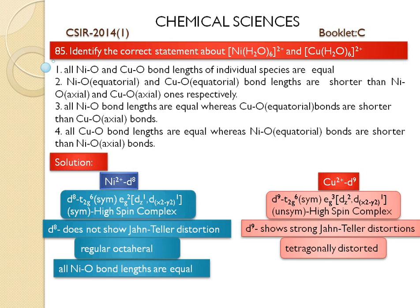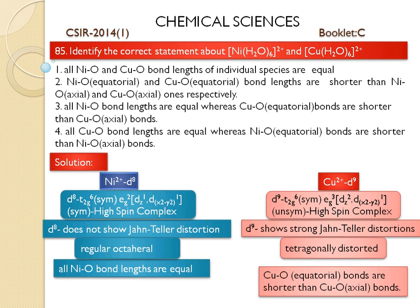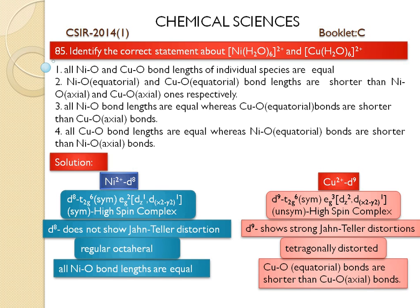In the tetragonally distorted structure, copper-oxygen equatorial bonds are shorter than copper-oxygen axial bonds. So the correct answer is: all nickel-oxygen bond lengths are equal, whereas copper-oxygen equatorial bonds are shorter than copper-oxygen axial bonds.